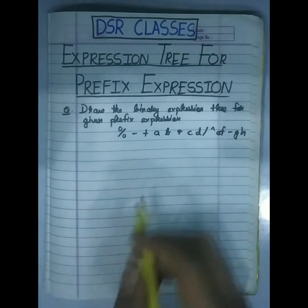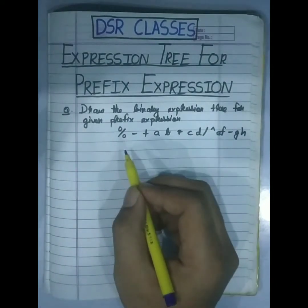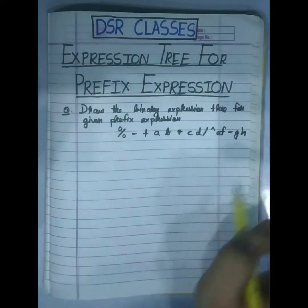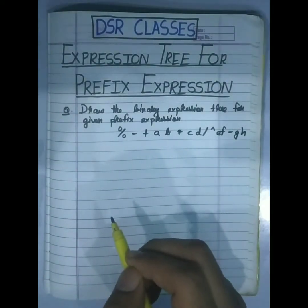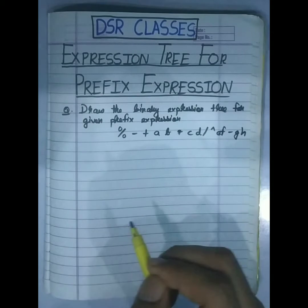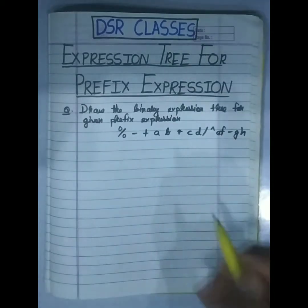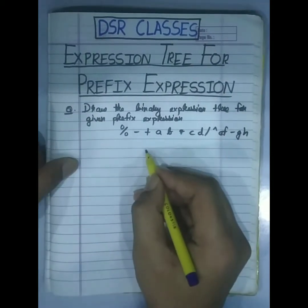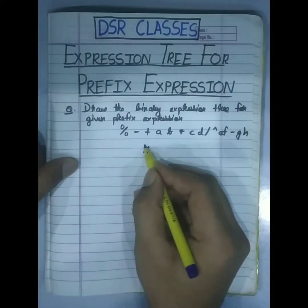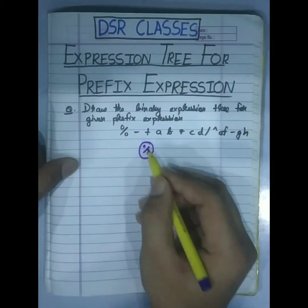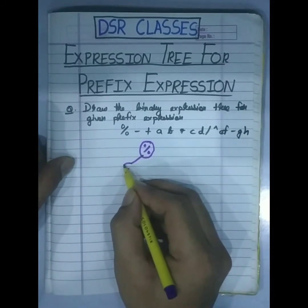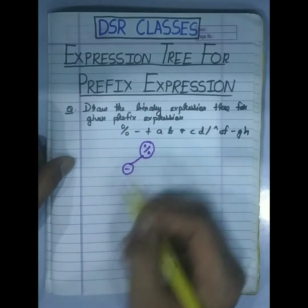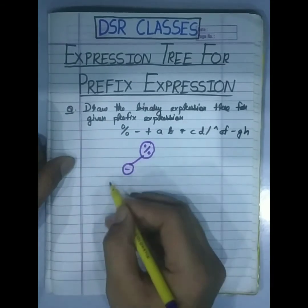I will show you how to build this step by step. The first node will be the root node. So 'mod' becomes the root node. Then 'minus' will be the left child of mod.